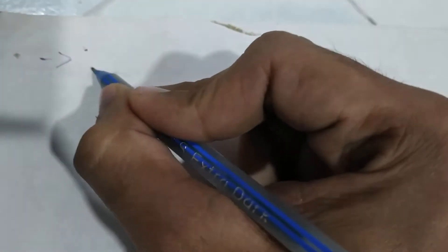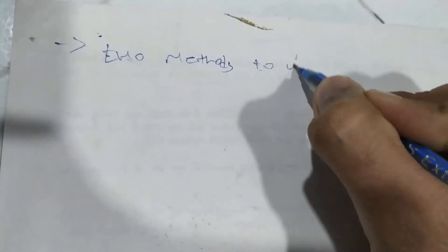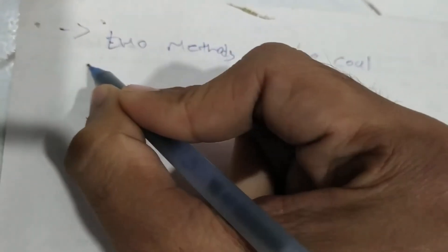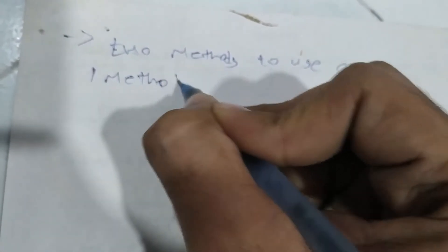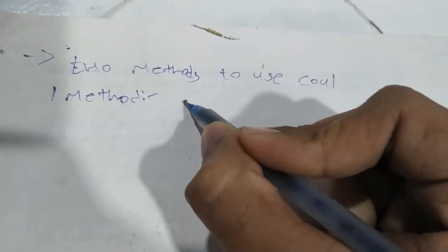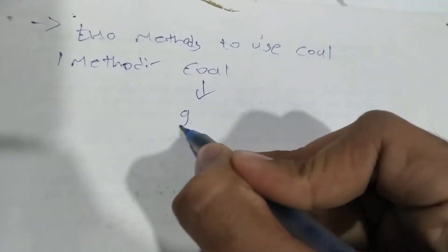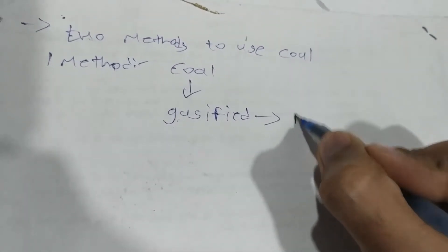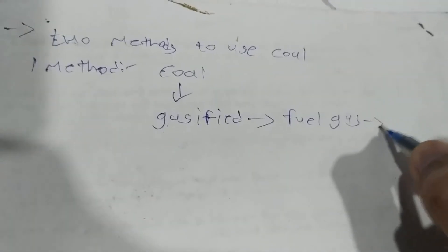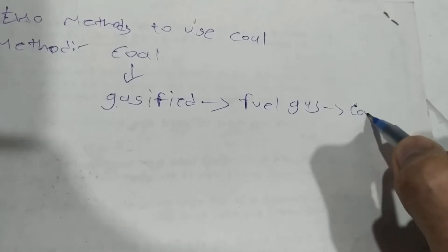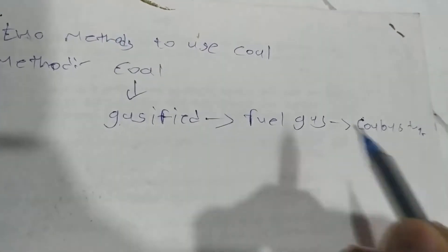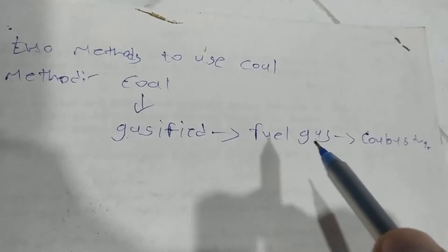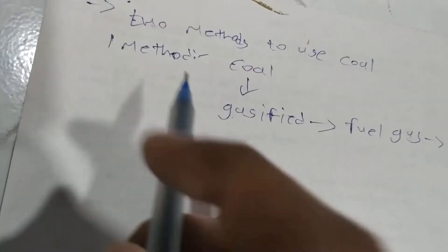Now I will tell you how to use coal. There are two methods. The first method is we have to gasify the coal, and the resulting fuel gas gets supplied to the combustor. So first the coal gets gasified and this fuel gas is supplied to the combustor.